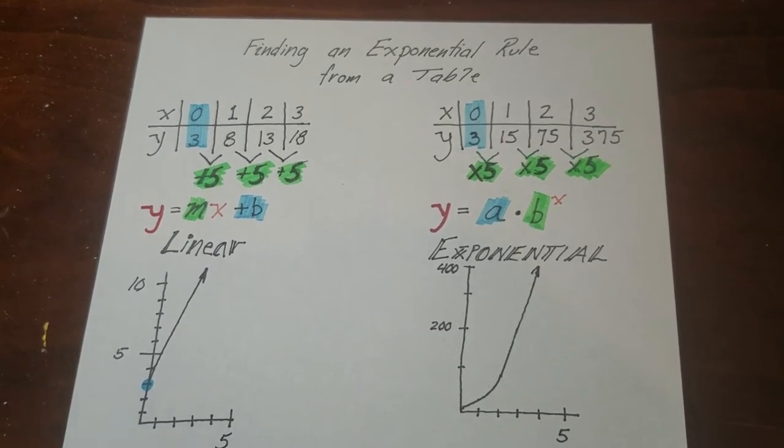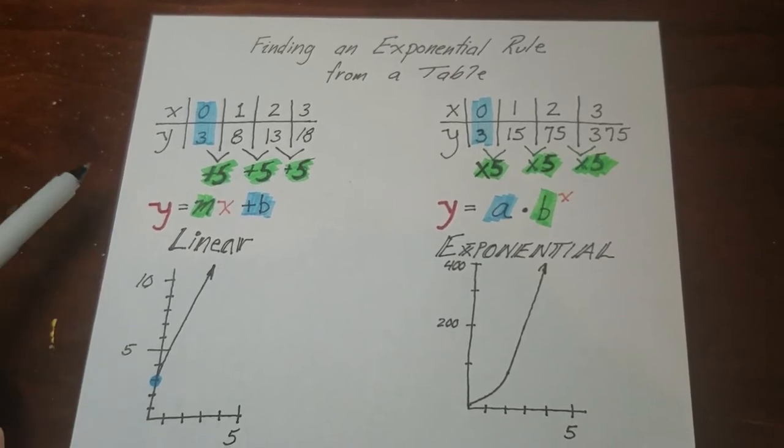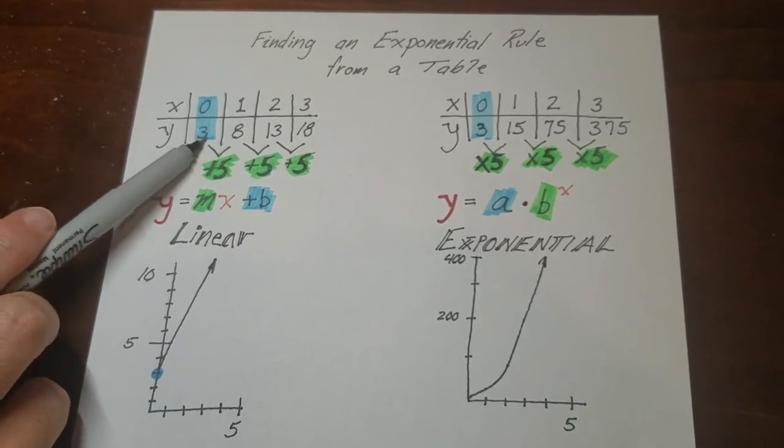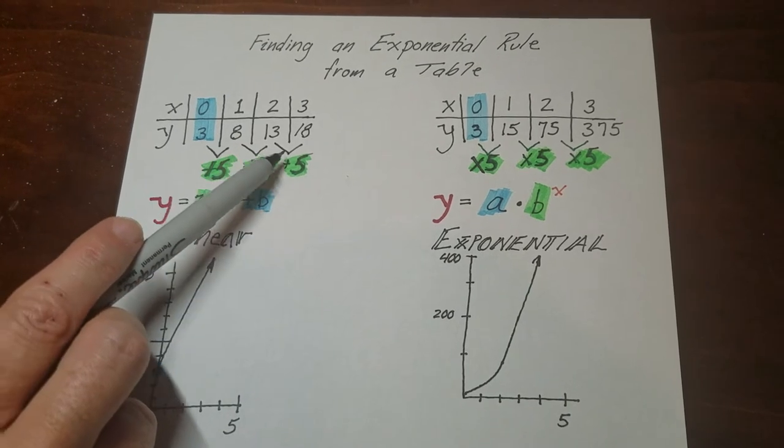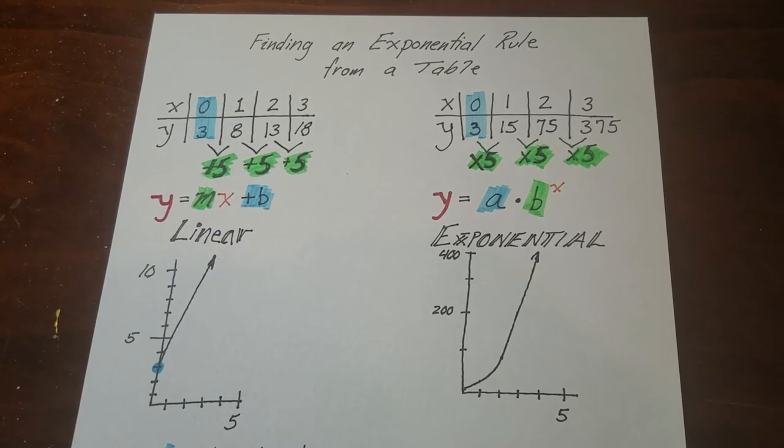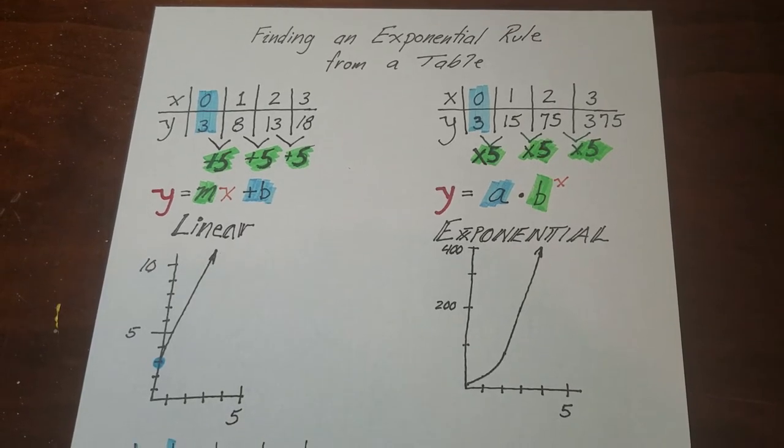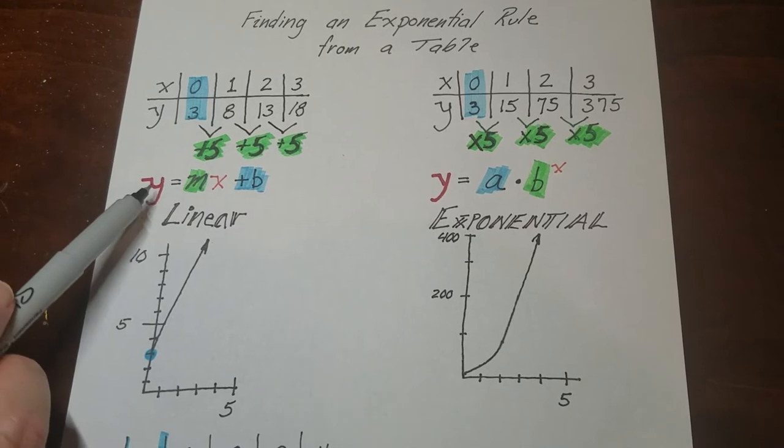So what I want to do is relate it to what you know about lines. When we have a linear function, we start here at 0, 3, and you can see that each step is going up by 5. So I'm actually adding 5 each time. If you see repeated adding like that or repeated subtraction, that indicates that it's a linear function. And if it's a linear function, it follows this formula.